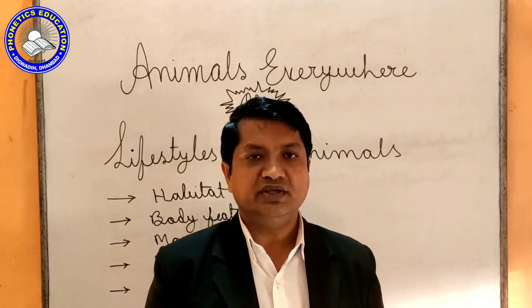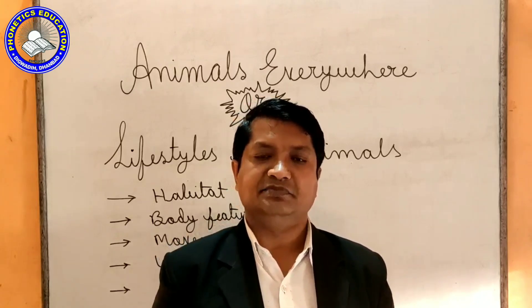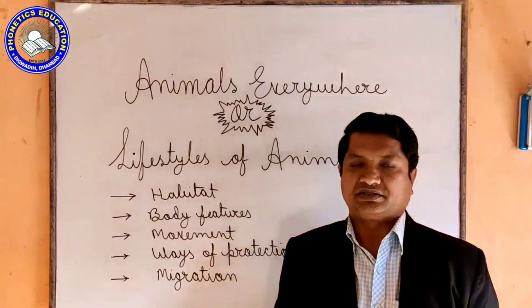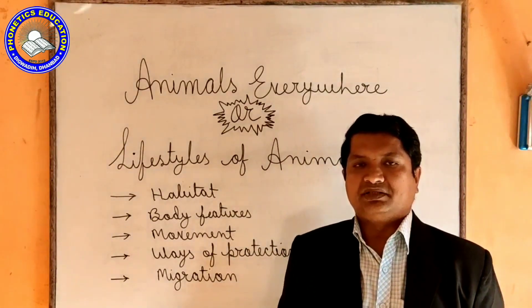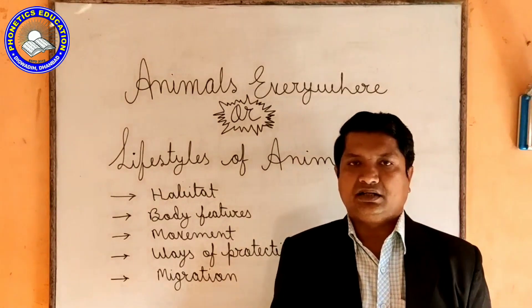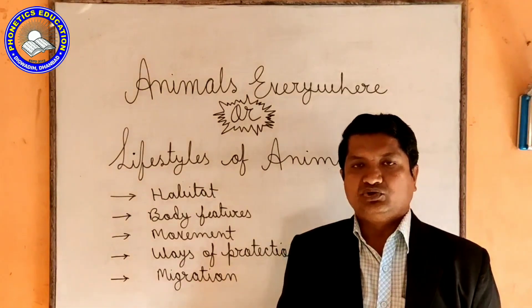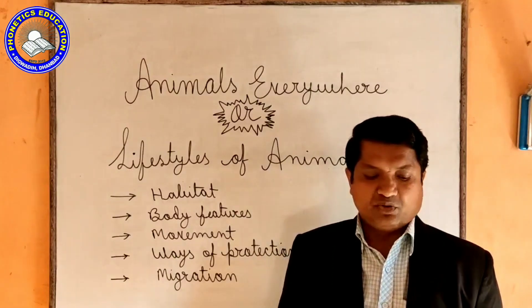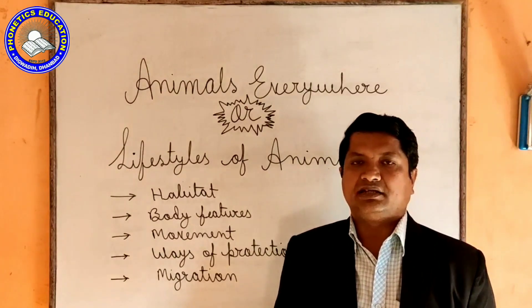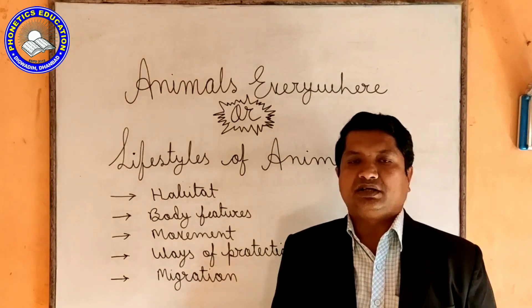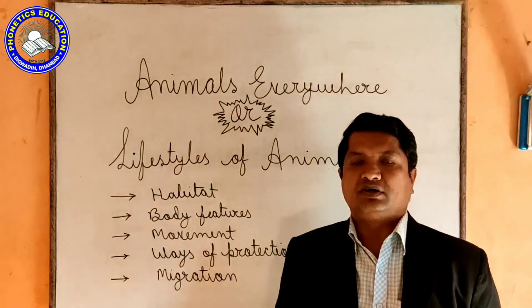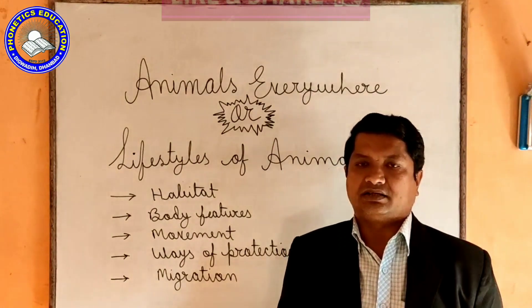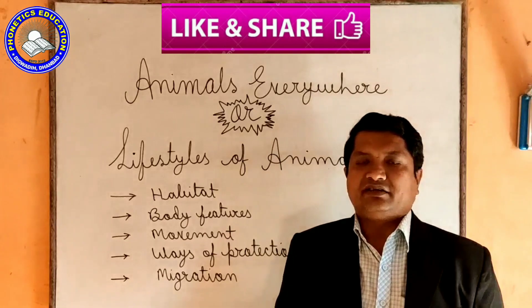The ones who are not able to fly are called flightless birds. Ways of protection: There are many animals that can change their color to camouflage, so that they can blend their body with the environment and change their body color from the environment to protect themselves.